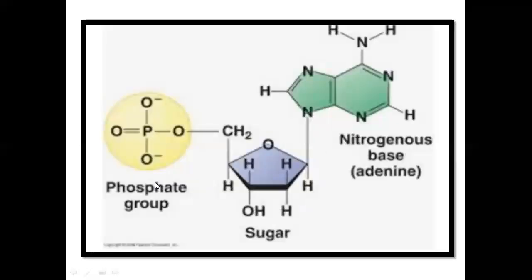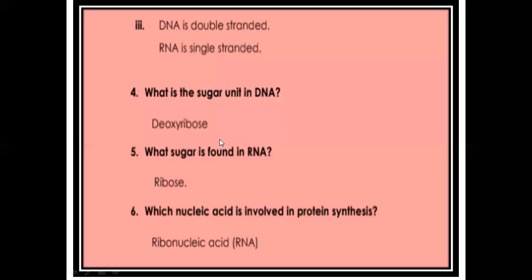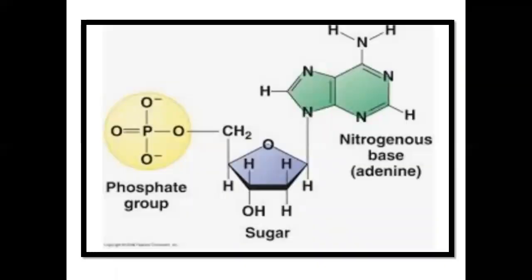The three components present in each strand of DNA and RNA are: the phosphate unit, the sugar — which is deoxyribose sugar in the case of DNA and ribose sugar in the case of RNA — and the nitrogenous bases. These three components are compulsory: phosphate group, sugar group, and nitrogenous bases. The sugar varies between DNA and RNA; the nitrogenous bases also vary, except that all bases are the same except thymine and uracil.